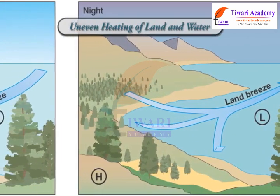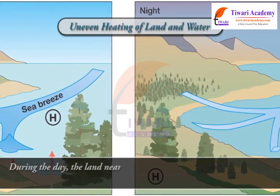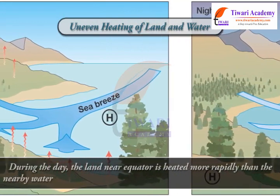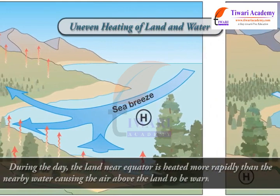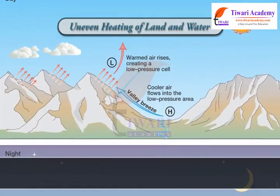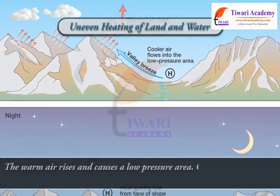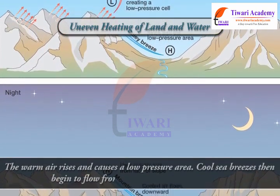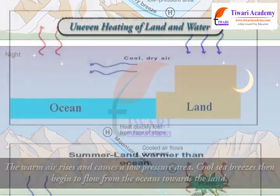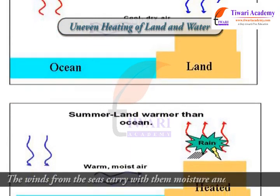Second, uneven heating of land and water. During the day, the land near the equator is heated more rapidly than the nearby water, causing the air above the land to be warmed by conduction. The warm air rises and causes a low pressure area. Cool sea breezes then begin to flow from the oceans towards the land. The winds from the sea carry with them moisture and bring rain.